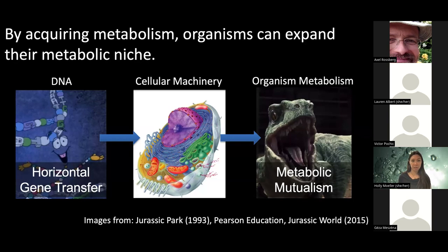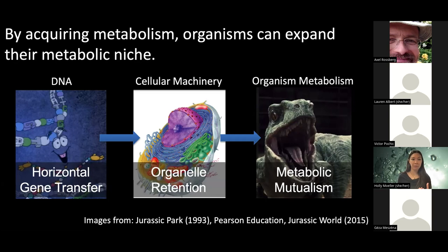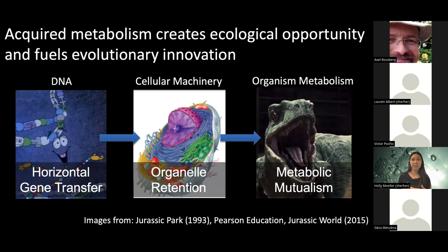This acquisition of metabolism at the whole-organism scale is what we call a metabolic mutualism — a mutually beneficial interaction mediated by the exchange of metabolites. Acquisitions can also happen at other biological scales, for example through horizontal gene transfer and the lateral movement of genes encoding different forms of metabolism, or at the subcellular level through the retention of functional machinery, which I'll discuss in the second half of the talk.